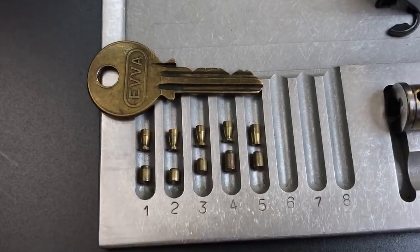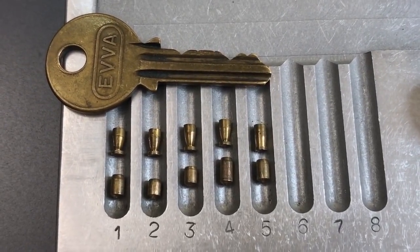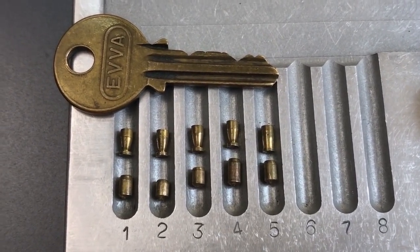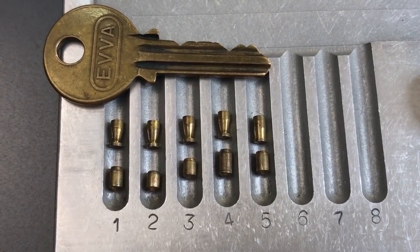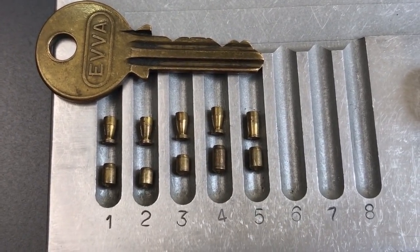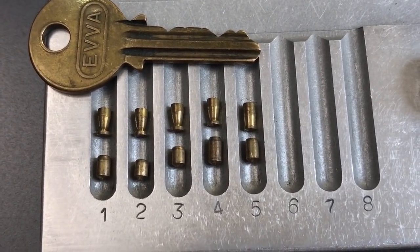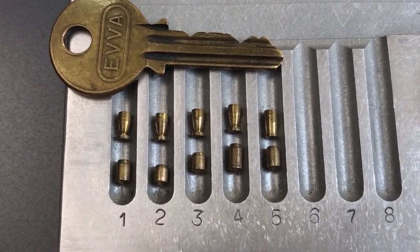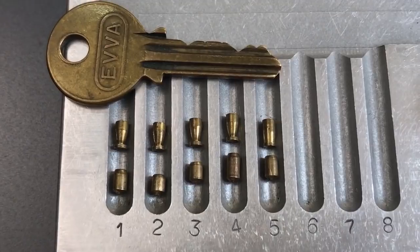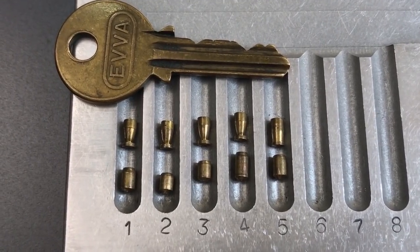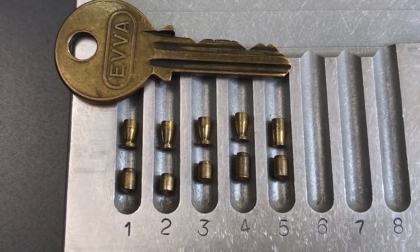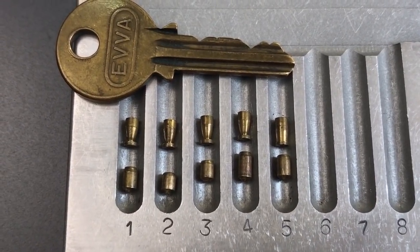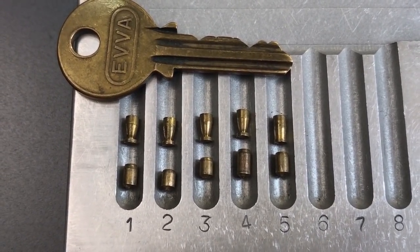That's all I have for you on this vintage EVA rim cylinder. I'm glad I came across this lock. I have never seen pinning like that in any lock, I don't think, and certainly not in an EVA before. So, very interesting to me. If you have any questions or comments about this lock, please put them below. If you like this video and would like to see more like it, please subscribe. And, as always, have a nice day.